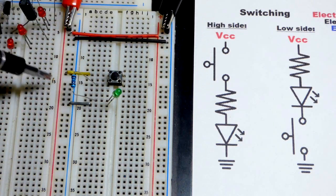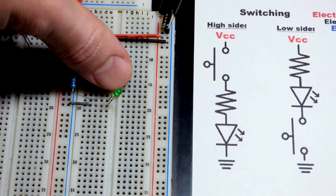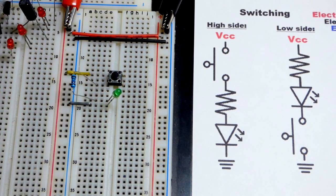So the positive side is the higher voltage. So that is the high side switching. Pretty straightforward and that's pretty common for what you see.